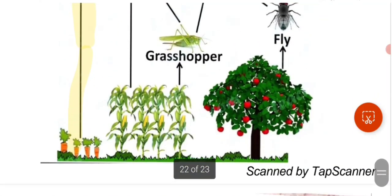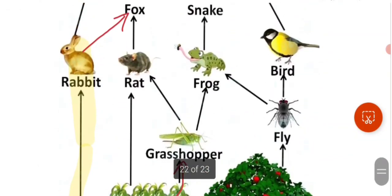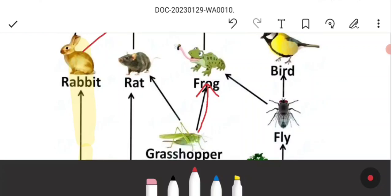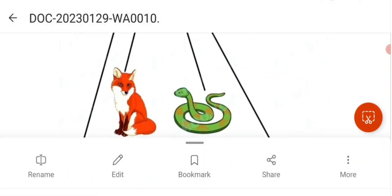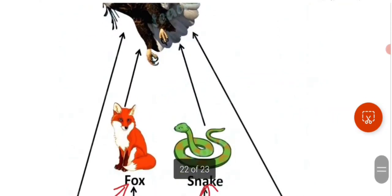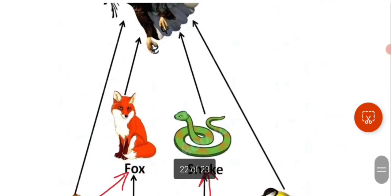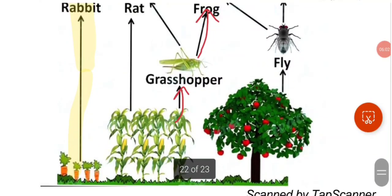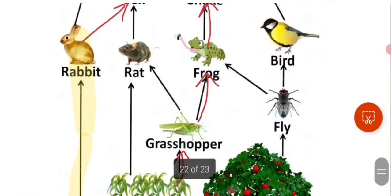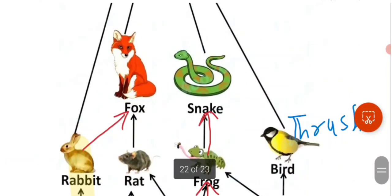The second food chain is the plant to grasshopper, grasshopper to frog, frog to snake, and snake to eagle. Next, the plant to rat to fox to eagle. The tree to flies to frog to bird, and the thrush, the insect-eating bird, will be eaten by eagle.